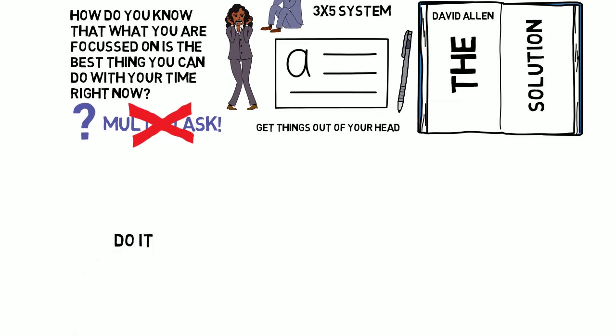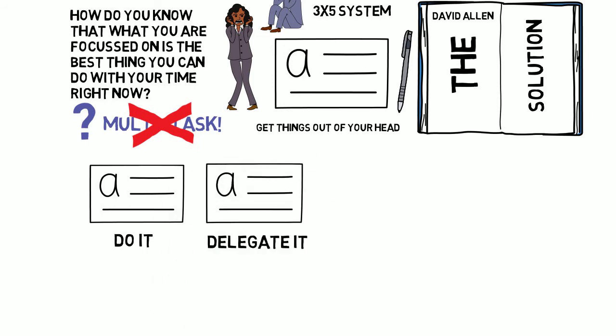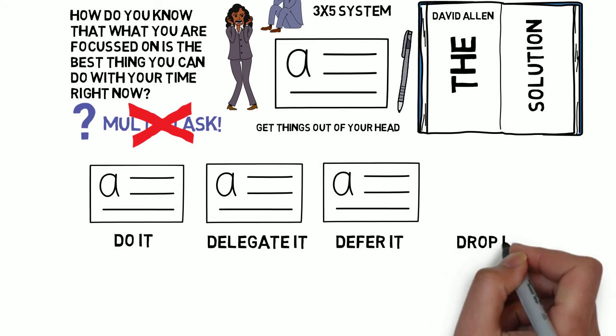Do it, for things you can do quickly right now. Delegate it, for things you can get someone else to do. Defer it, for things you need to do but can wait or require more time. And drop it, for tasks that you can let go of.